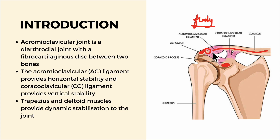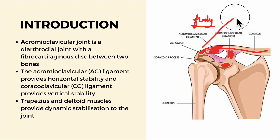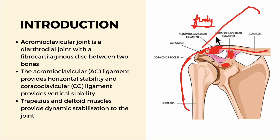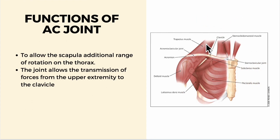The acromioclavicular ligament provides horizontal stability and the coracoclavicular ligament provides vertical stability. Here is the acromioclavicular ligament and here is the coracoclavicular ligament. The trapezius muscle and the deltoid muscle provide dynamic stabilization to the joint, as you can see more clearly in this diagram.